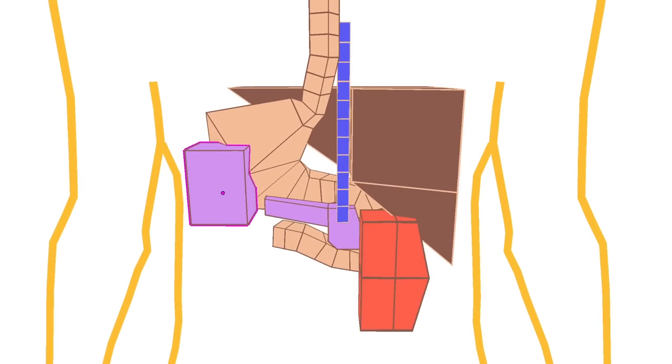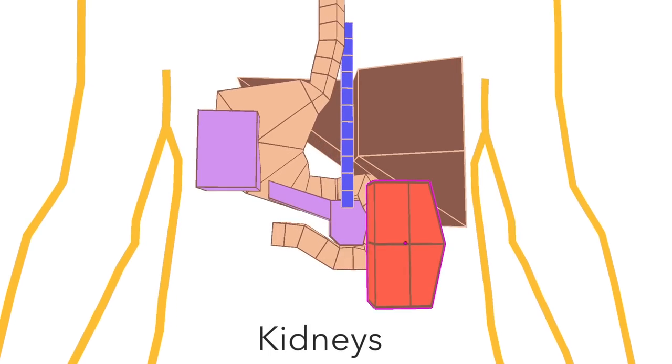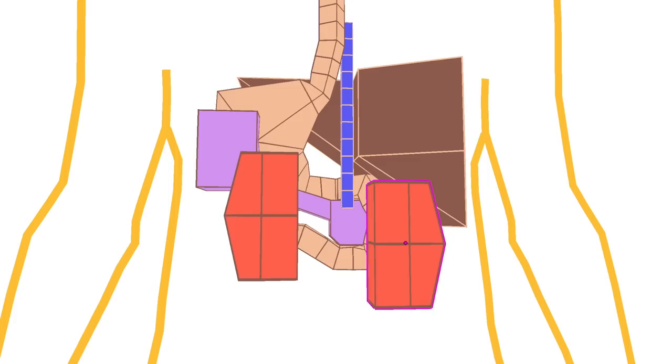It pushes down the right kidney, which is slightly lower than the left. The left kidney sits just underneath and behind the spleen, which is just behind the stomach.